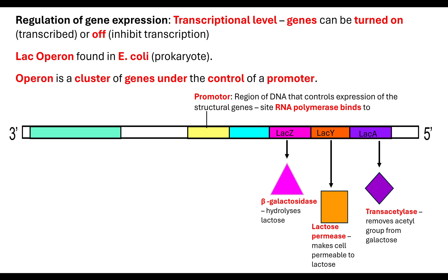The last one is lacA, known as transacetylase. This is an enzyme that's going to remove the acetyl group from the galactose, making it an intermediate substrate which can be utilised in respiration. So these three structural genes — lacZ, lacY and lacA — are all under the control of that promoter region.